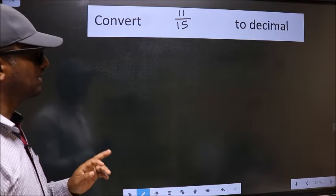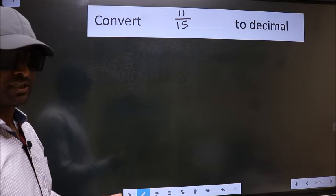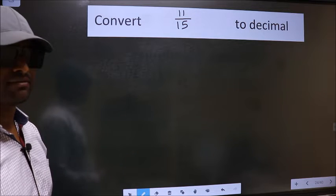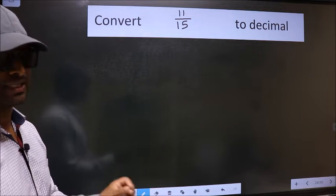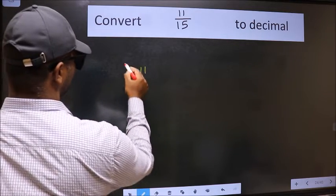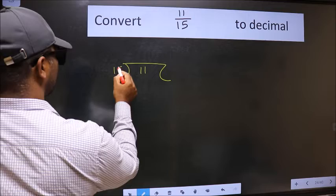Convert 11 by 15 to decimal. To convert to decimal, we have to divide, and to divide, we should frame it in this way: 11 here and 15 here.